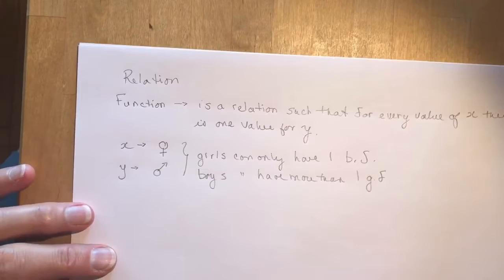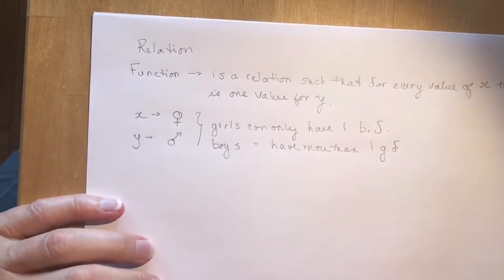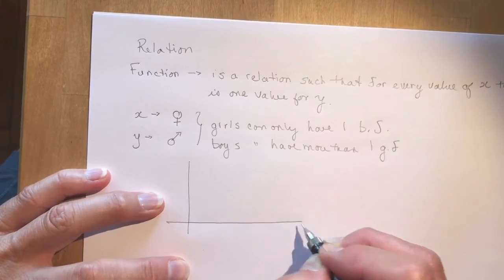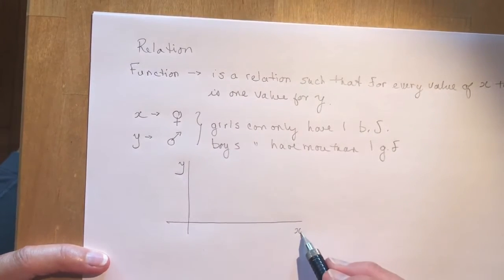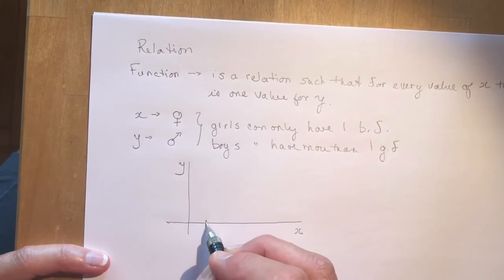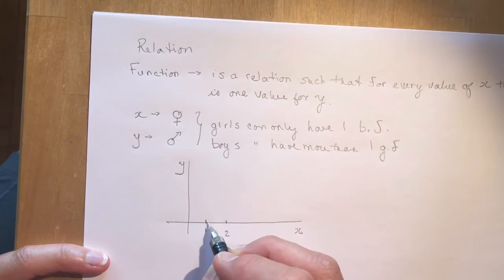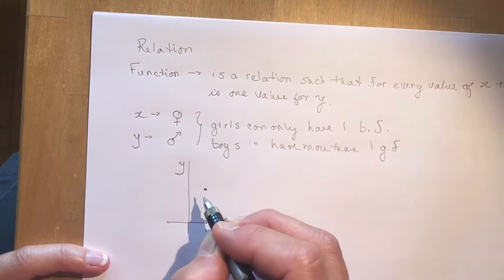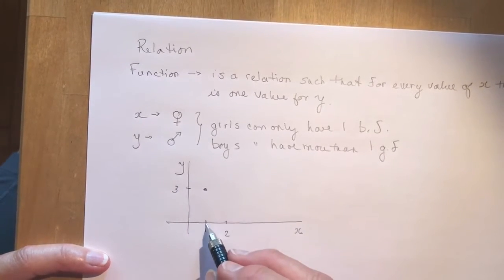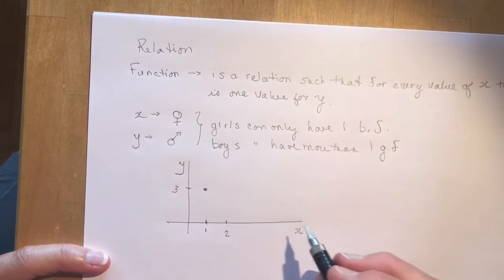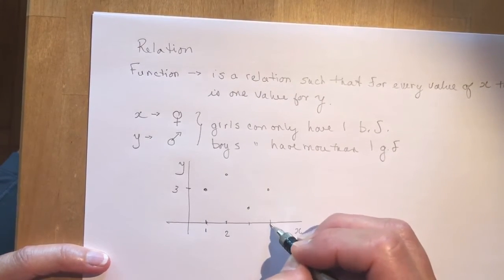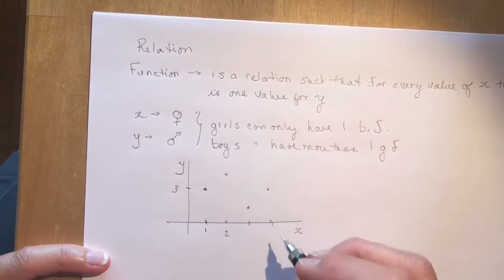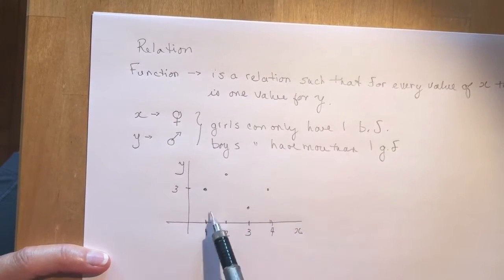So maybe you're thinking this is a little bit crazy, but let me show you. When you have a function it says for every value of x there's one value for y. So if we put this on a coordinate plane where we have x's — girls — and y's — the boys — every x, if I go to one here, this one can only have one value, let's say three. So this girl x has one boyfriend y. That means if you have a graph that is a function, there will never be another dot on top of the x value — there can only be one.